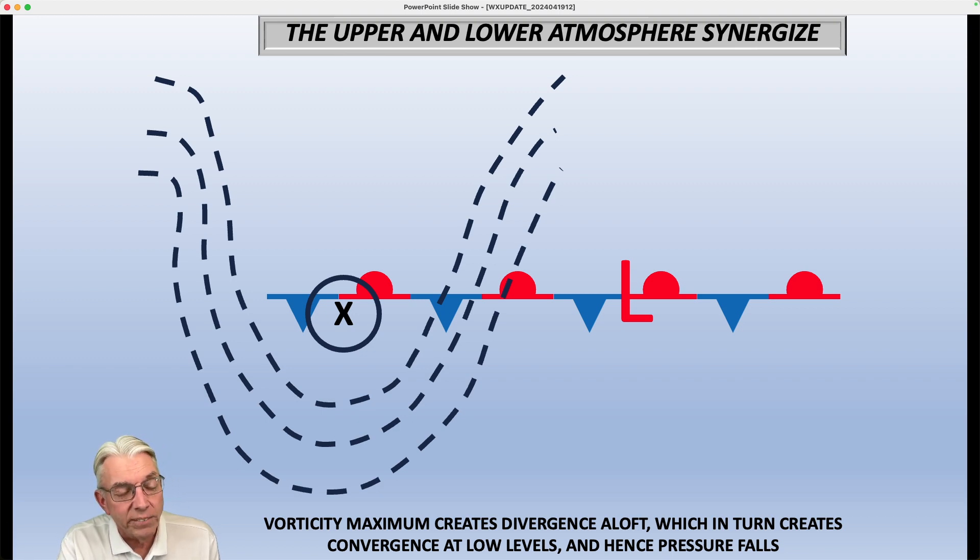Developed years and years and years ago, but it still holds true today is that once you get an area of low pressure to form along a boundary, if that low intensifies, then part of the stationary front becomes cold, part of it becomes warm. And as that happens, that deepens the upper air wave, which creates more divergence aloft and more convergence of the ground.